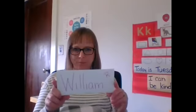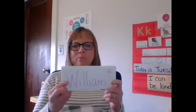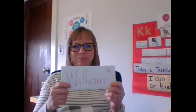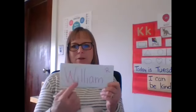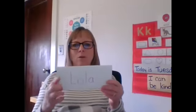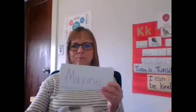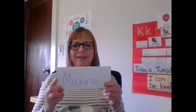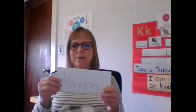All right, let's do your names. I want you to be paying attention to all the letters and help me find the letter K in everybody's names — whoever has them. All right, here we go. Whose name is this? William! William starts with the letter W — W-I-L-L-I-A-M spells William. Does he have a K? Lola — L-O-L-A, Lola. Maxine — M-A-X-I-N-E spells Maxine.